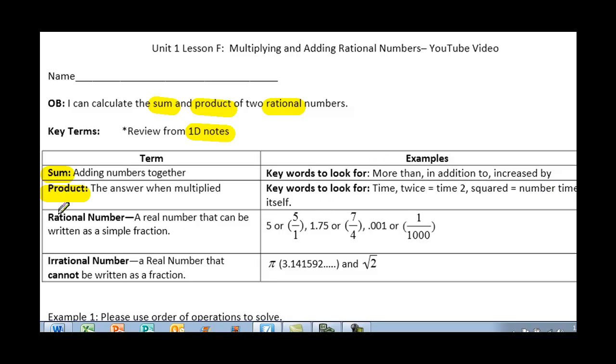Rational number and irrational number. I'll go ahead and highlight those for you. These were taken right from your 1D notes, so we should be able to identify these now. So rational number - a number that can be written as a simple fraction, and irrational number - a number that cannot be written as a fraction. So these are some things that we will be going over as we go through the notes for today.